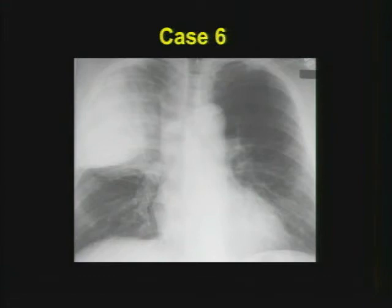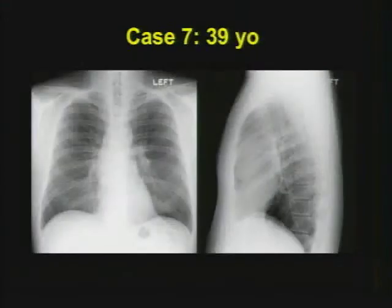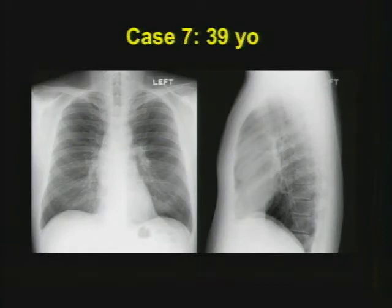What sort of differential could you offer just from the chest radiograph alone? Always use the lateral film if that's provided — it can be very helpful in localizing a lesion into an anatomic compartment. Subtle lesions on a frontal projection can sometimes be very dramatic lesions on the lateral film.